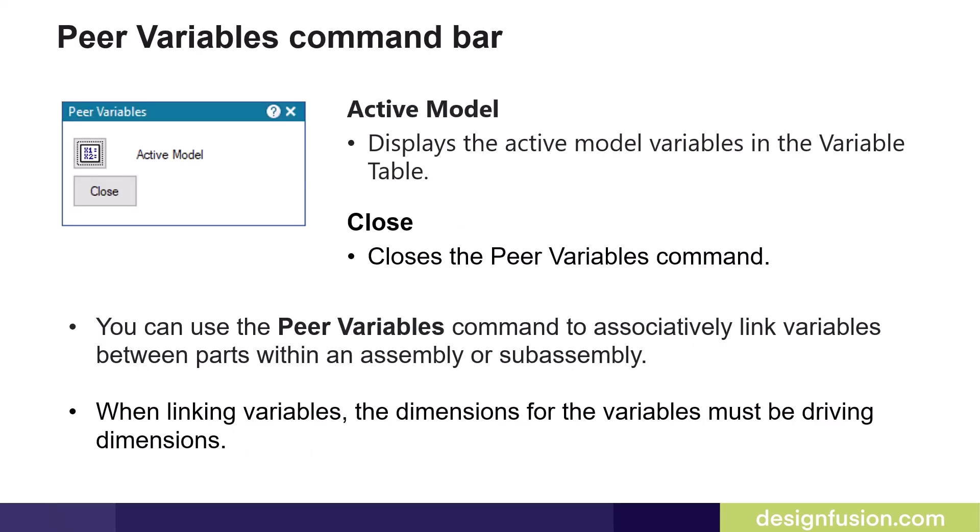This slide shows you the Peer Variables command bar. Along with editing variables, you can use the Peer Variables command to associatively link variables between parts within an assembly or sub-assembly. When linking variables, the dimensions for the variables must be driving dimensions.